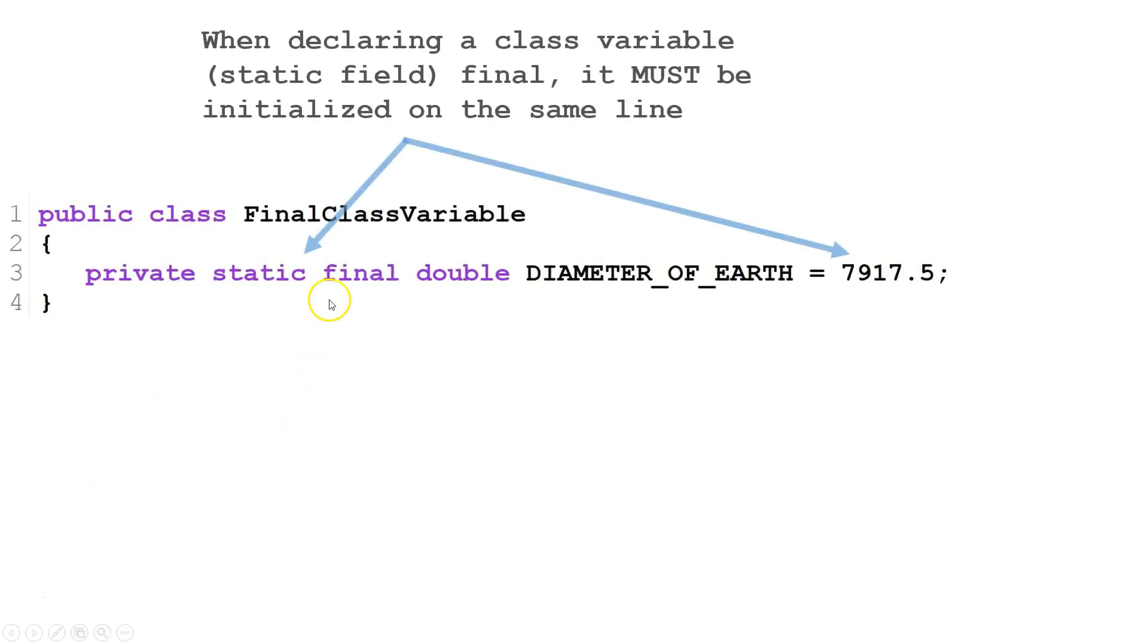Our first example is a class variable, also known as a static field, that was declared final. In this case we must declare and initialize it on the same line.